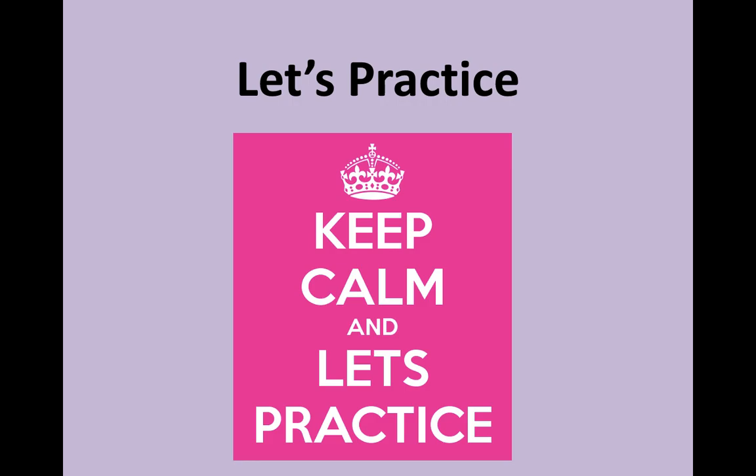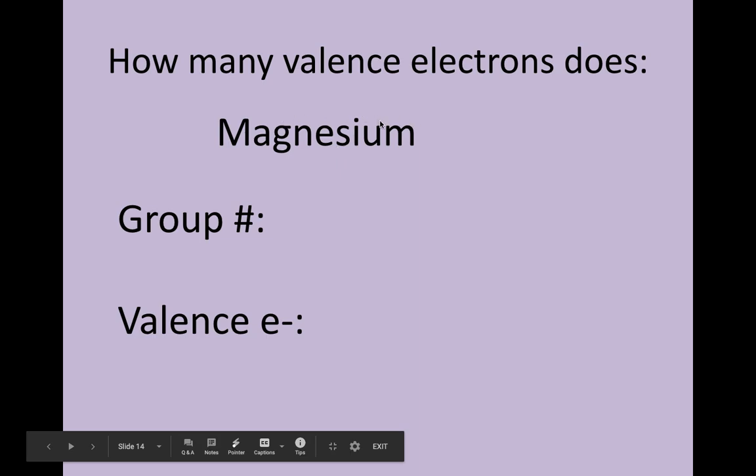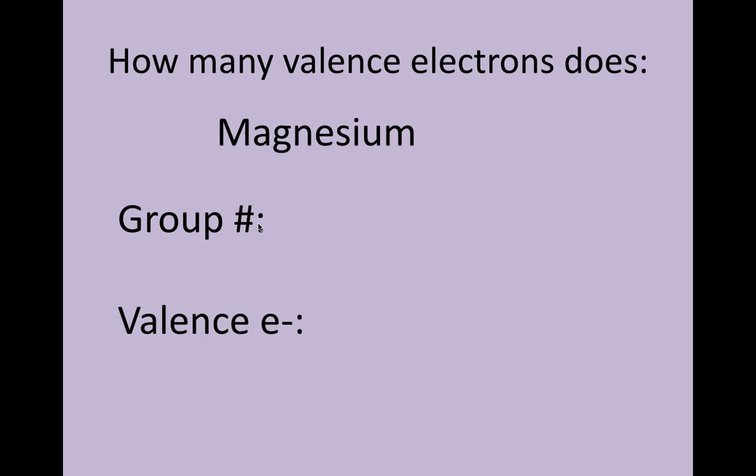All right, let's do some practice. You do want to have your periodic table next to you. How many valence electrons does magnesium have? Take a minute. Find magnesium on the periodic table. What group number is magnesium in? Magnesium is in group two, which is great. Since it's in group two, it will have two valence electrons.